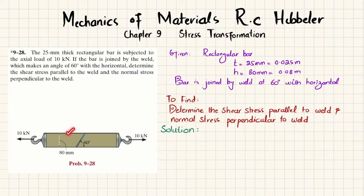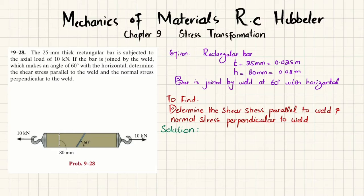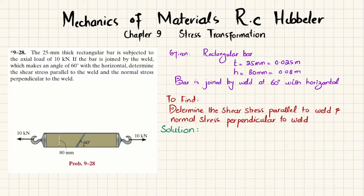You can see this is a rectangular bar having a height of 80 millimeters and a thickness of 25 millimeters. This bar is subjected to a 10 kilonewton axial load, and it is joined using a weld which makes an angle of 60 degrees from the horizontal. We have to find the shear stress along this weld and the normal stress perpendicular to this weld.